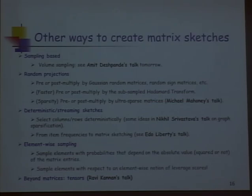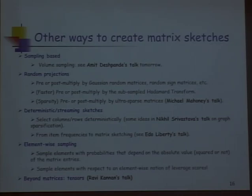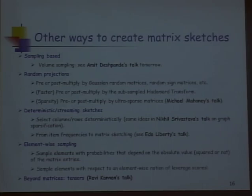There are also deterministic ways to pick a subset of rows and columns — Nikhil Srivastava will talk about that in graph sparsification. Ido Liberty, speaking right after me, will discuss using streaming-type ideas to get very fast, very accurate sketches. You could also sample individual elements rather than full rows and columns, and leverage scores help there as well. Finally, you can move beyond matrices to tensors — three- or four-dimensional arrays — where things become much harder. For example, tensor rank is NP-hard to compute, whereas matrix rank is well understood.